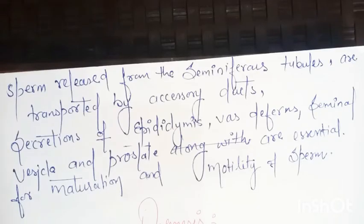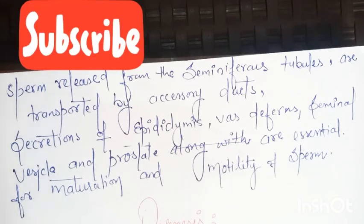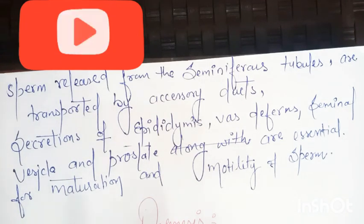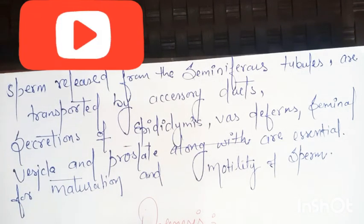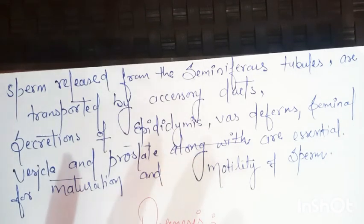Sperm released from the seminiferous tubules are transported by accessory ducts. Secretions of epididymis, vas deferens, seminal vesicle, and prostate are essential for maturation and motility of the sperm. These accessory ducts play an important role in the motility of sperm. This is how spermatogenesis occurs in the male.